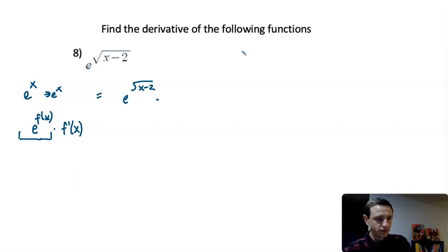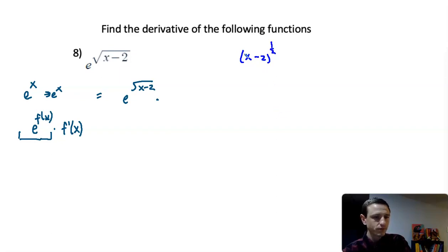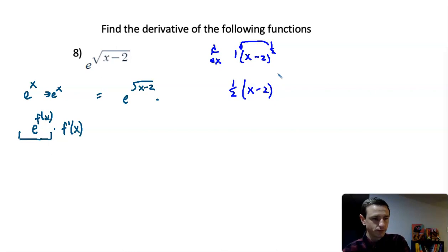Now I have to take the derivative of the square root of x minus 2, so I'll do that off to the side. The square root of x minus 2 is x minus 2 to the 1/2. So the derivative, using the chain rule, is 1/2 times x minus 2, and we subtract 1 from the exponent — 1/2 minus 1 gives us negative 1/2.